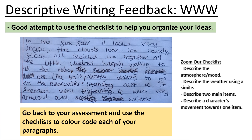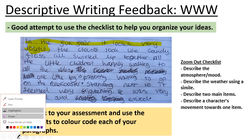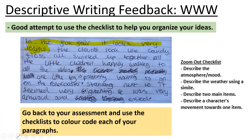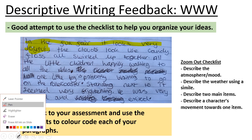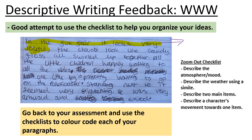Now I'm going to go through and colour code the paragraph. You won't be able to highlight the checklist in front of you, so instead you're going to label. My first step is to describe the atmosphere and mood. I've done that here: 'In the funfair it looks very joyful' - my mood is that it's joyful. So I'm going to highlight that and then grab my purple pen and label it using the checklist. This is the atmosphere and mood.